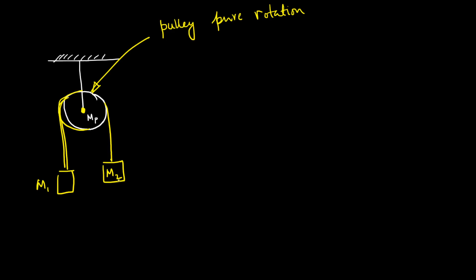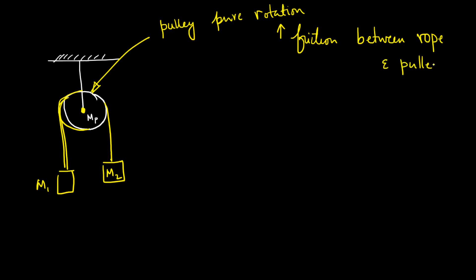I shall take care to keep to the sign convention. One more aspect you should not miss is that the rotation is caused due to friction between the rope and pulley. To make the problem simple, we shall assume no slip between the rope and pulley. Under these assumptions we shall now solve the problem.